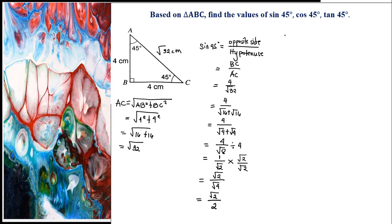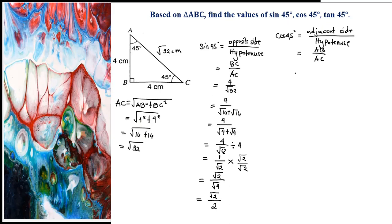Next, cosine 45 degrees. Cosine 45 degrees is equal to the adjacent side of the right-angle triangle divided by the hypotenuse side. AB is our adjacent side, and AC is the hypotenuse. AB has a measurement of 4, and AC is square root of 32 centimeters. We break down square root of 32 the same way as in sine 45 degrees.